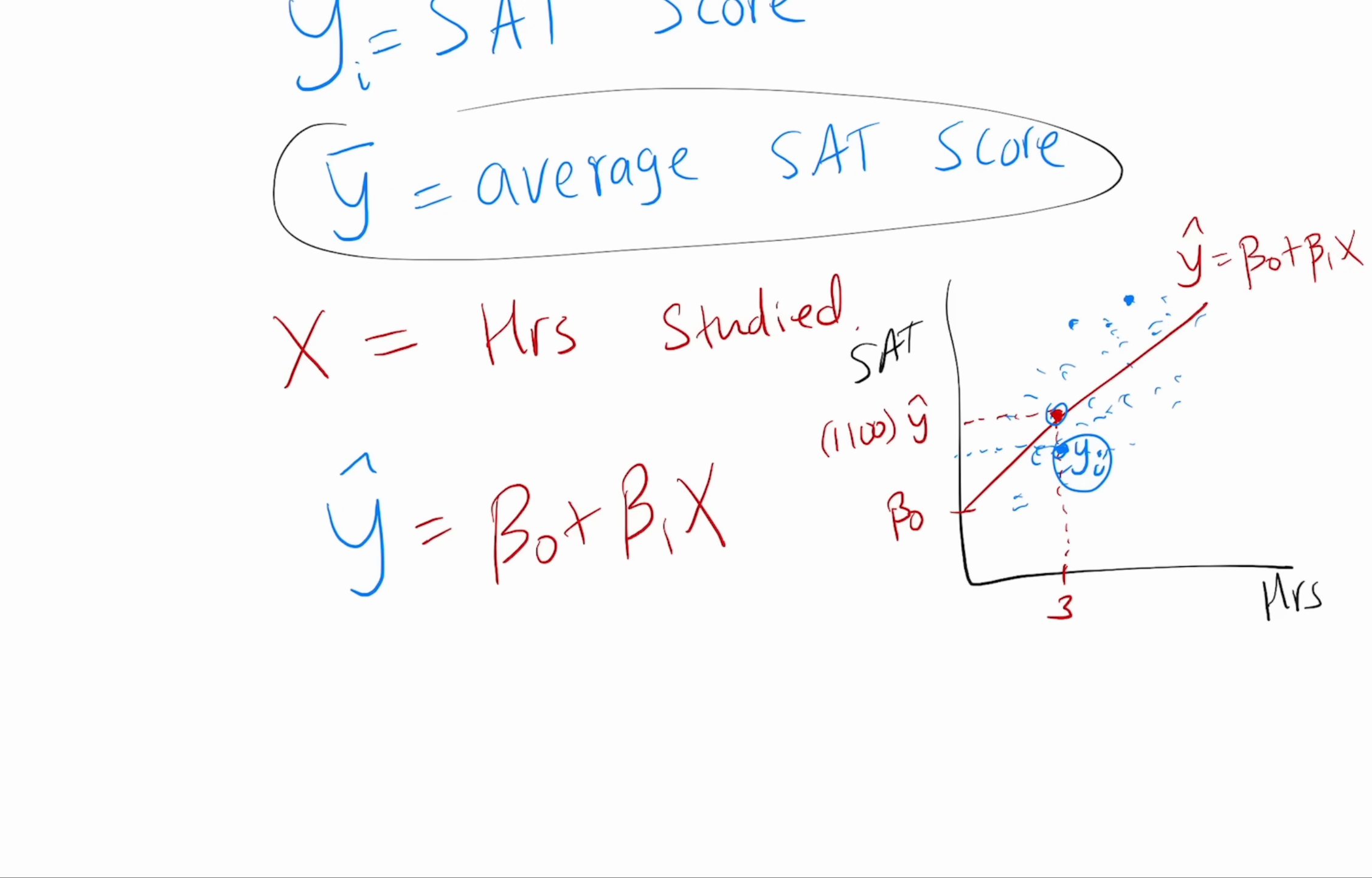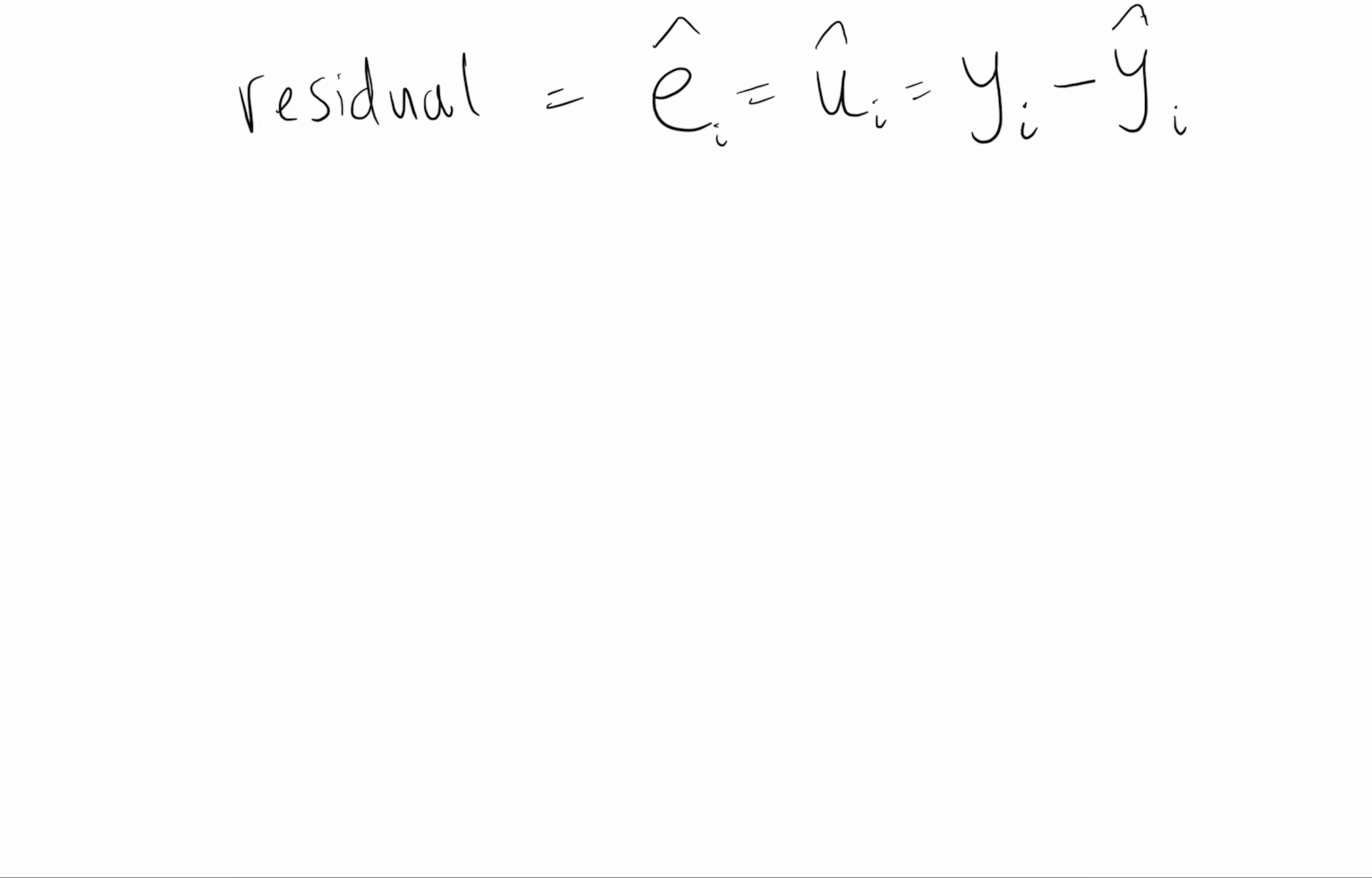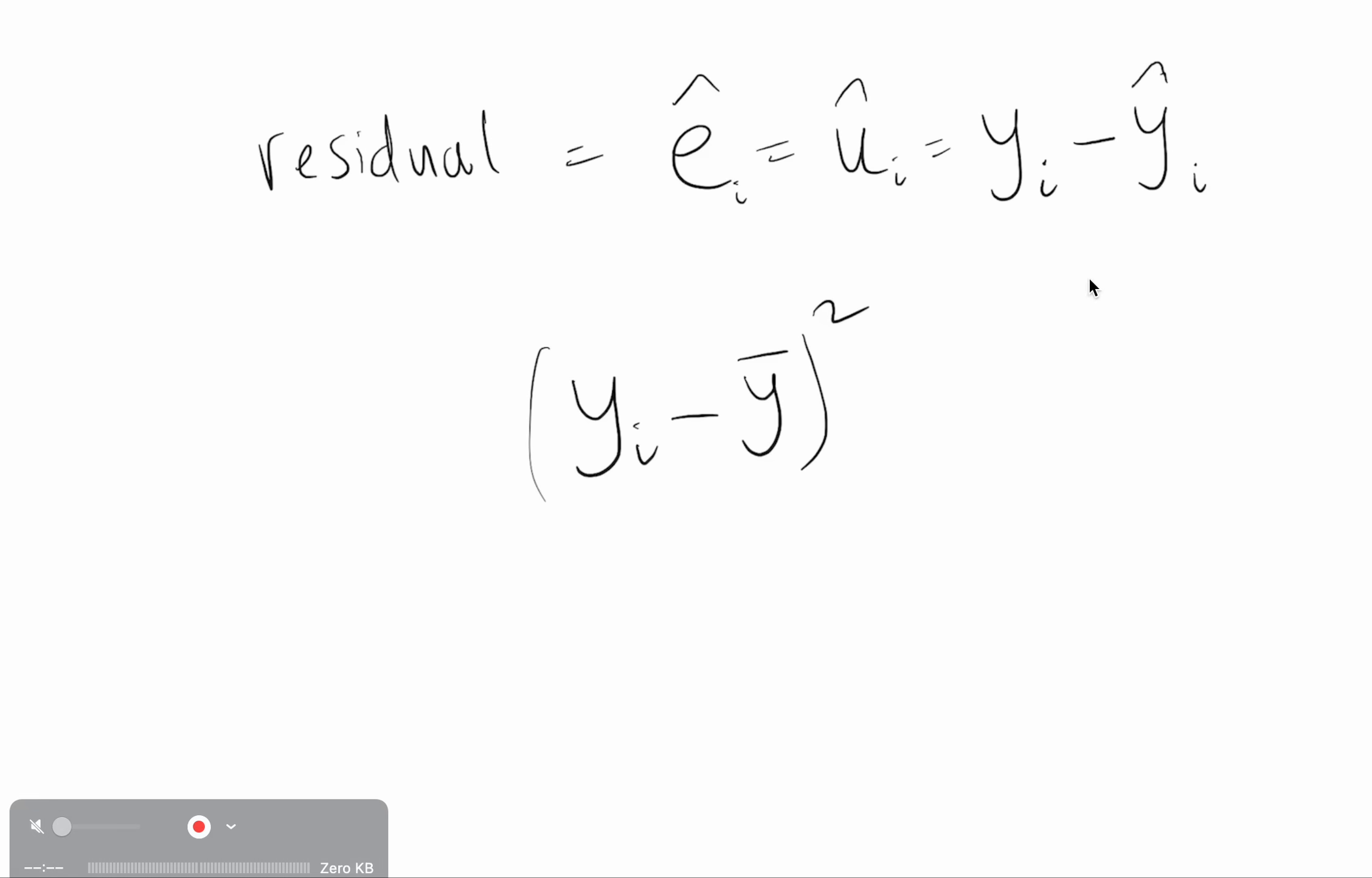You would just guess y-bar, which means the sum of squared residuals in that case is, all right, each person minus your guess for them average, that's a residual. We'll square them just so that the negatives and positives don't cancel each other out. That way all the residuals are positive, capturing the magnitude, how far off is your guess of y-bar from their actual thing. If you add them all up, this is basically how good you did when you had no information.